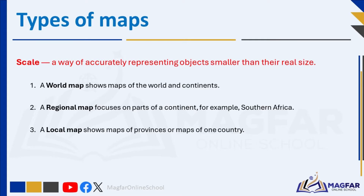A world map shows maps of the world and continents. It provides a broad overview of the entire globe, and because it shows the entire world, it is often less detailed. A regional map focuses on parts of a continent, for example southern Africa. A local map is a map of a province or one country — it zooms in on smaller areas like cities or neighborhoods, and because it focuses on a small area, it has high detail.